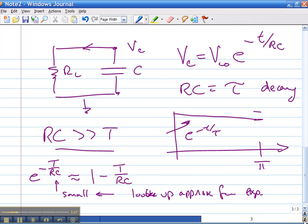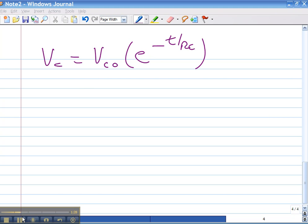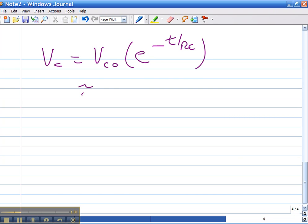All right, so we have Vc is Vc0, e to the minus t over RC, which is approximately equal Vc0 times 1 minus t over RC.